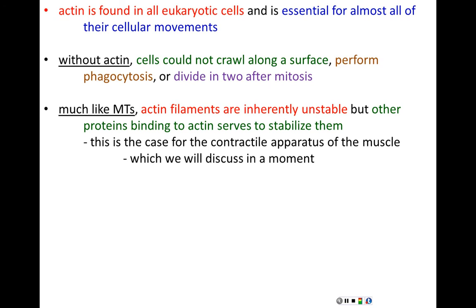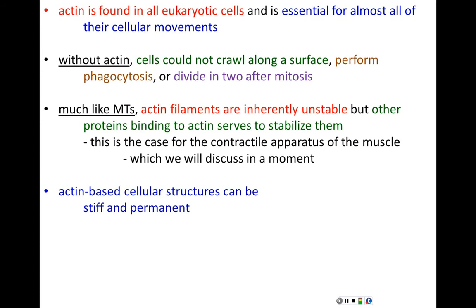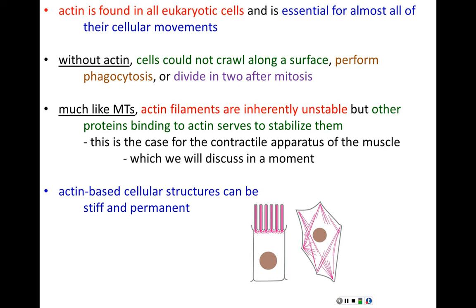Not all actin-based structures are transient or dynamic. There are many actin-based cellular structures that are stiff and permanent. Examples of this are the microvilli. Microvilli are thin, finger-like projections, especially in the small intestine. They increase the surface area of the cell membrane and allow cells to absorb nutrients more readily.